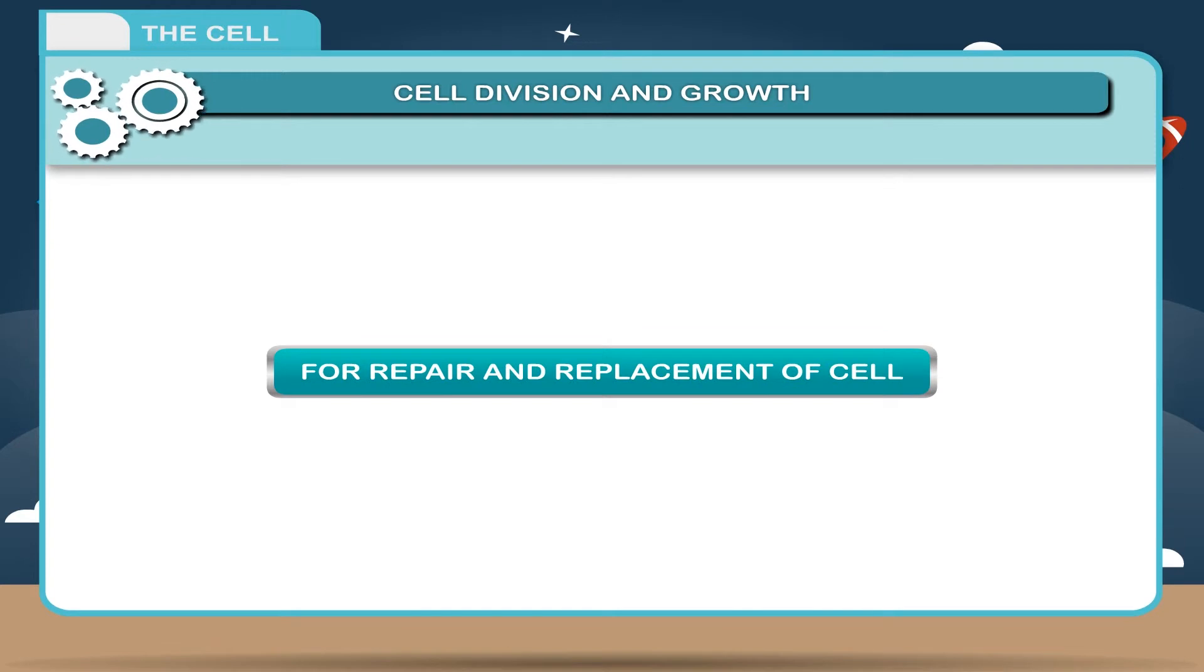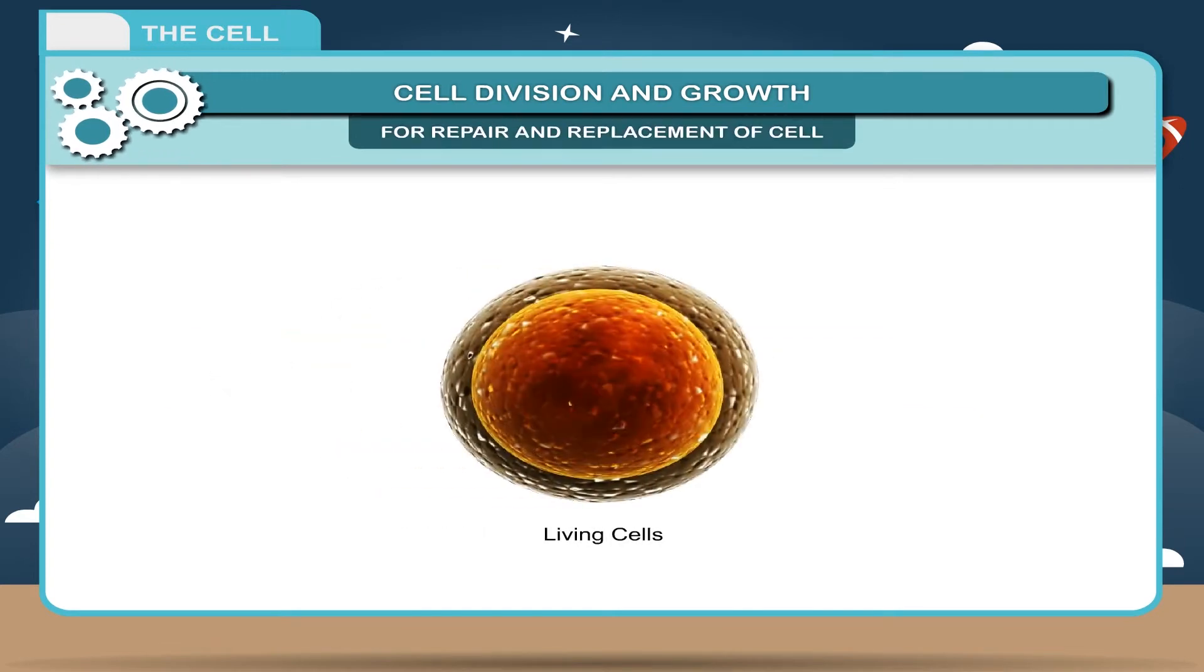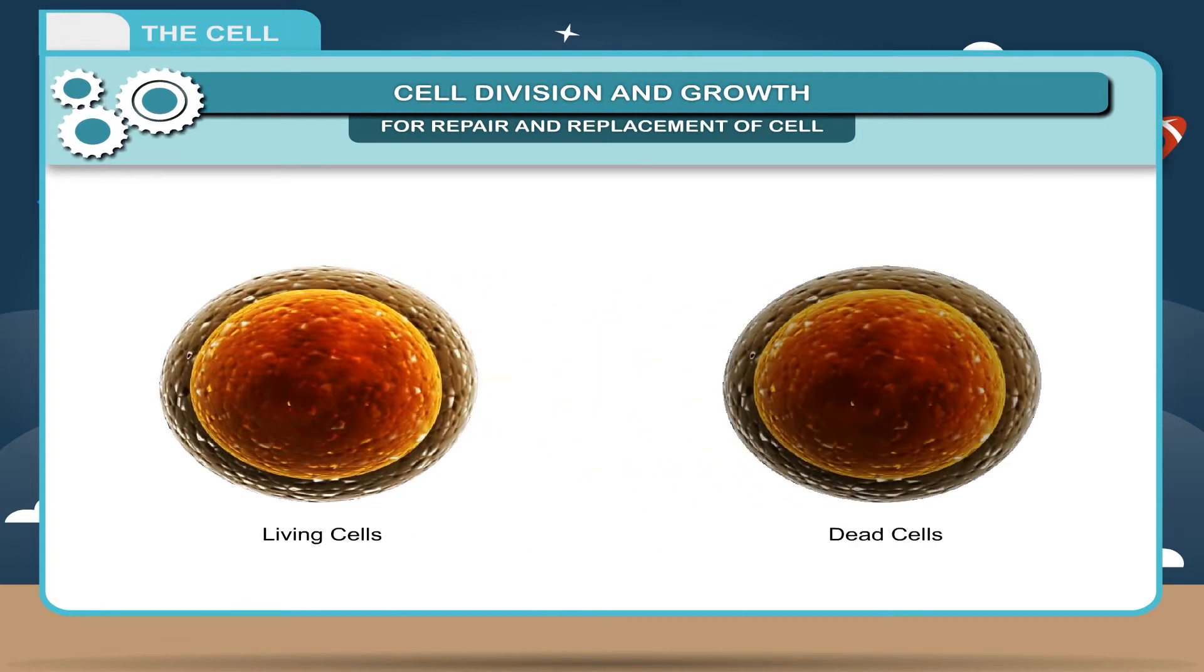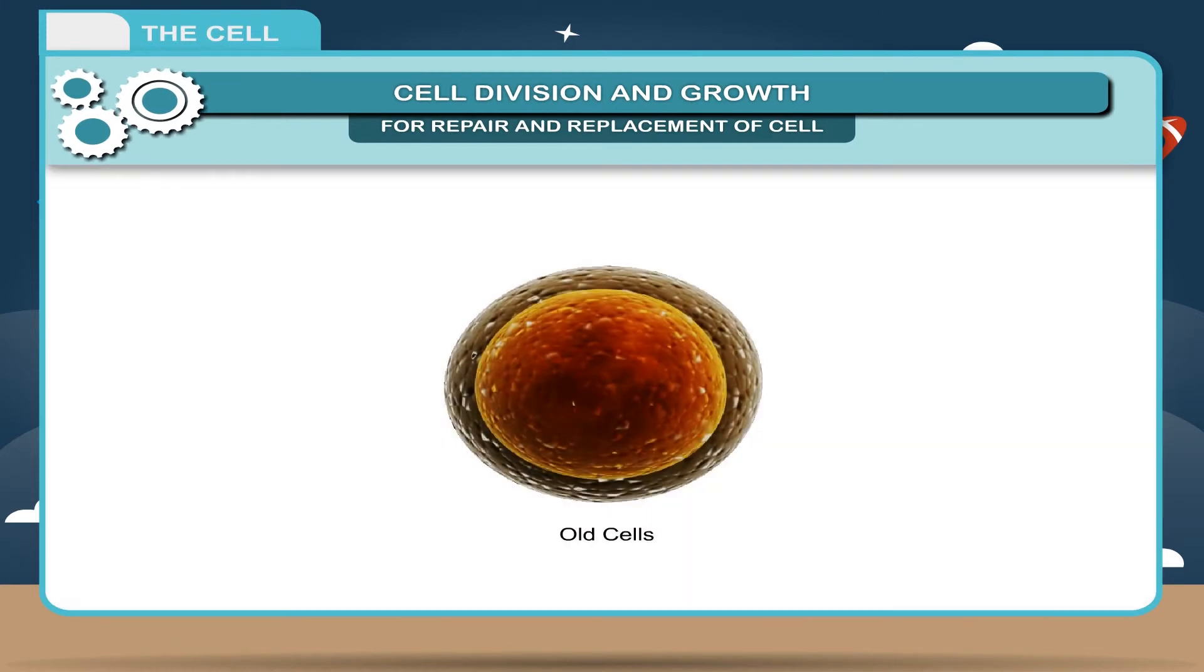For repair and replacement of cells, almost all cells of all living organisms have a limited life span. After that they die. So after some time, old cells are replaced with new cells. The process of cell division helps to replace dead and worn out cells.